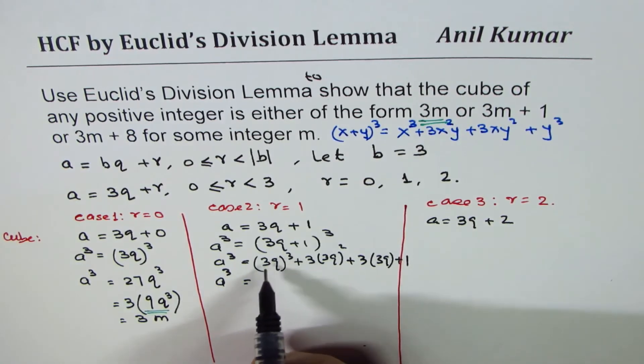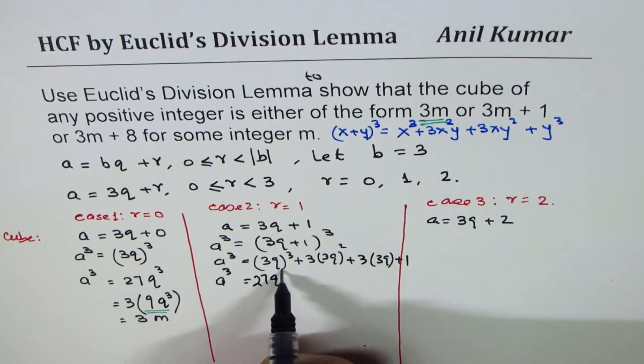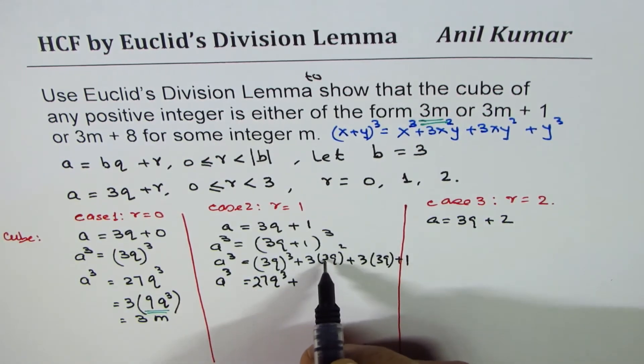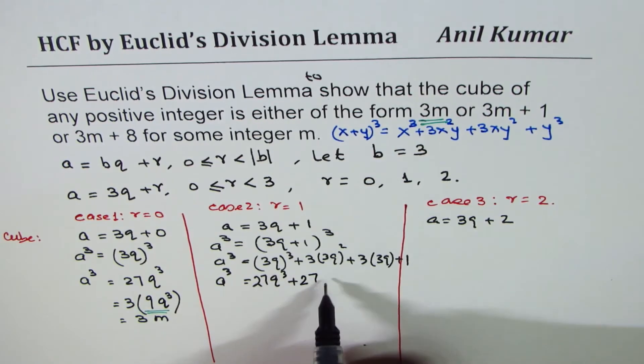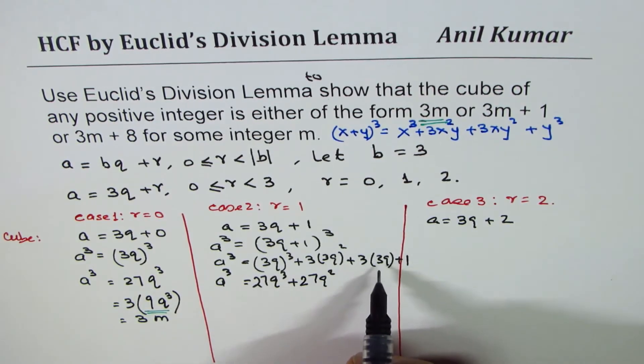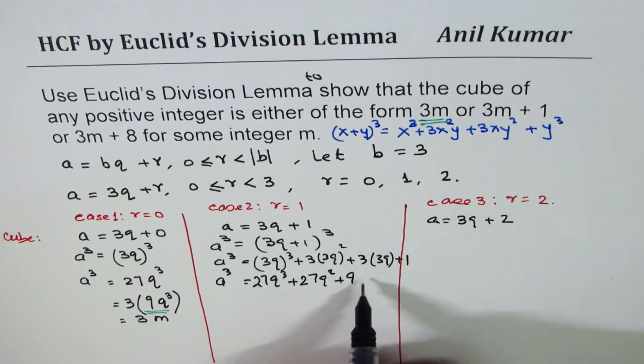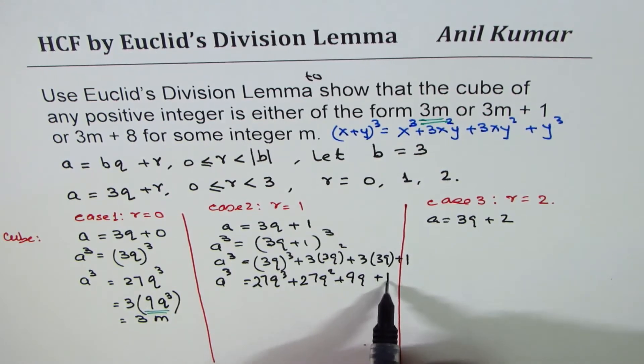Let me expand. 3 cube is 27, so 27Q cube plus square is 9, 9 times 3 is again 27 Q square. 3 times 3 is 9, so you get 9Q. 9 plus 1.